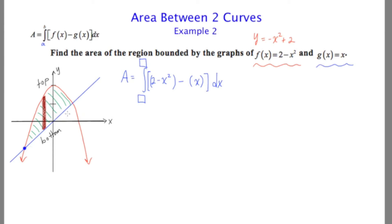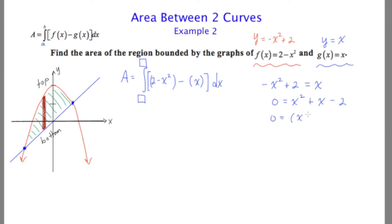Unfortunately, I don't know where those points are — I don't know the lowest x and I don't know the highest x. To figure this out, I have to see where these two curves cross, and we can do this by setting the two functions equal to each other. If y equals negative x squared plus 2 and y also equals x, we can simply say that negative x squared plus 2 equals x. Recognizing this as a quadratic, we set everything equal to 0. It's factorable, and we get x equals negative 2 or x equals 1.